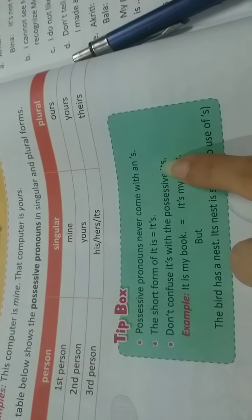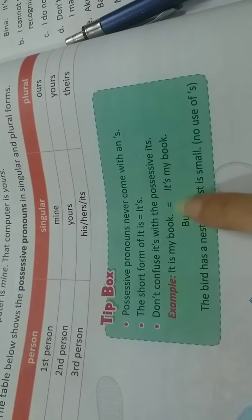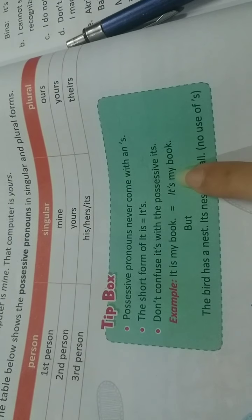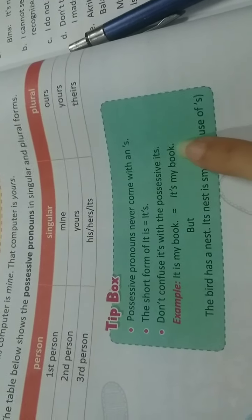Don't confuse it's with the possessive its. This it's and this its both are different. This its is a possessive pronoun. And this it's means it is, for example, it is my book.